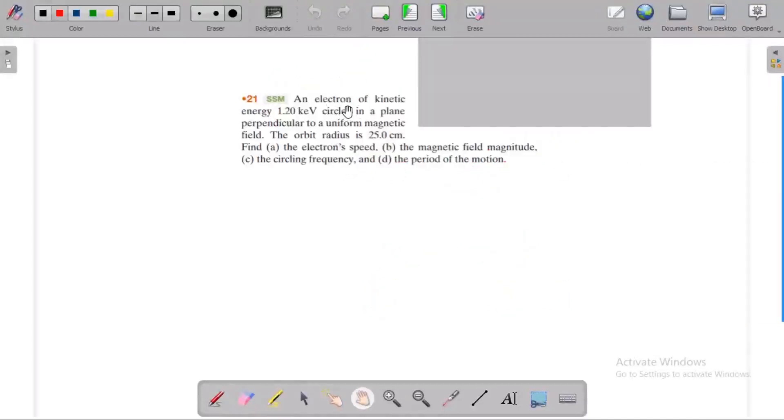In this question, the electron of kinetic energy 1.2 kilo electron volts (which is 10³ electron volts) circles in a plane perpendicular to a uniform magnetic field. The electron is in a uniform magnetic field, and the velocity is perpendicular to the magnetic field. If the velocity is perpendicular, the electron follows a circular path.